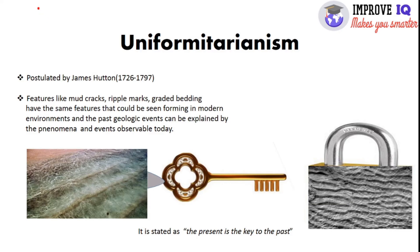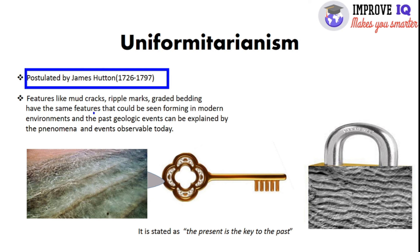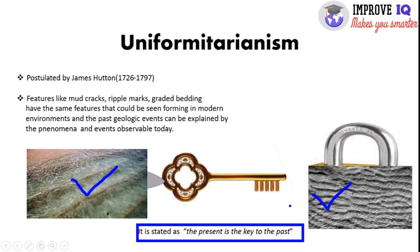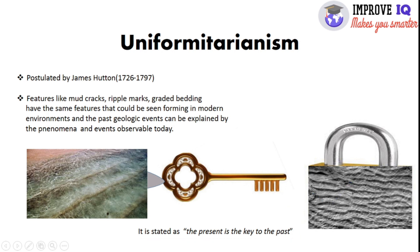The next principle is uniformitarianism, postulated by James Hutton between 1726 and 1797. Features like mud cracks, ripple marks, and graded bedding have the same features that can be seen forming in modern environments, and past geologic events can be explained by phenomena and events observable today. Mud cracks from the past reveal the present rock type. It is studied as 'the present is the key to the past.'